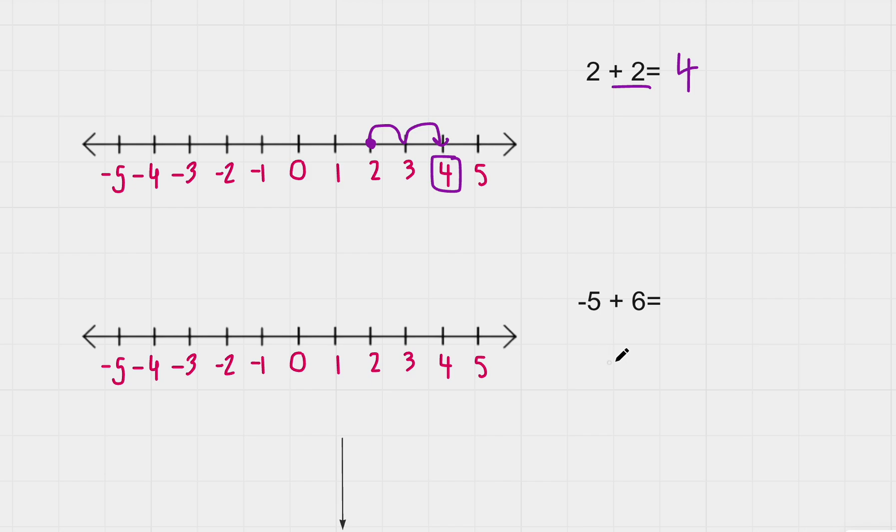Here we have negative 5 plus 6. Some people like to write it as 6 minus 5 to make it look neater, but you don't have to in this case. If we did 6 minus 5, we'd end up at 1. But let's try it this way to make it more challenging. First we're at negative 5, and we're going up 6. We're adding 6, so we're moving to the right instead of left. We go 1, 2, 3, 4, 5, 6, and get to this value, also known as 1.